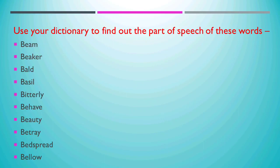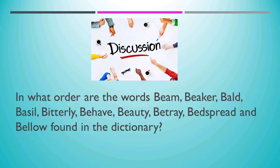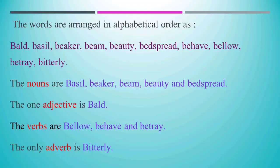You have to use your dictionary to find out what each of these words are — noun, adjective, verb, or adverb — and write the answers in your notebook. Before the answer is revealed, let me ask you: in what order do the words appear in a dictionary? The words in a dictionary are arranged in alphabetical order. You can check your answers now.